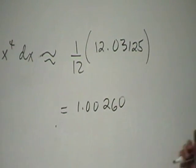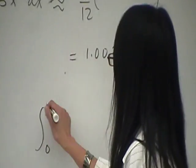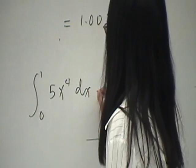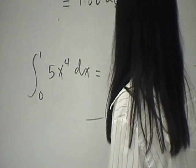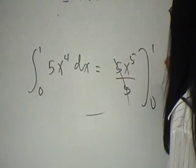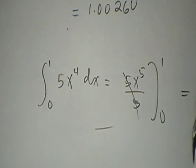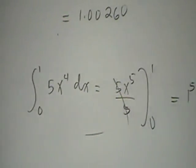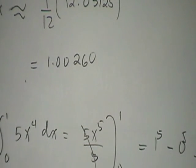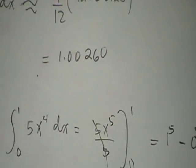The exact answer can be computed: the integral of 5x⁴ from 0 to 1 is x⁵ evaluated from 0 to 1, which equals 1. Our approximation was 1.0026 — very close to the exact answer of 1.